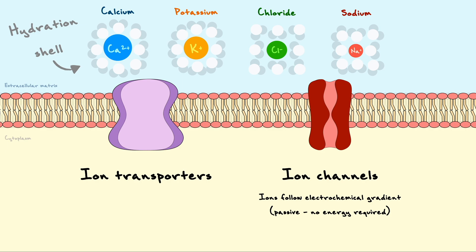On the other hand, ion transporters move ions against their electrochemical gradient, and this process requires energy, usually in the form of ATP, which makes this an active transporting mechanism.